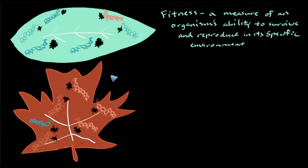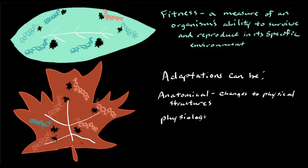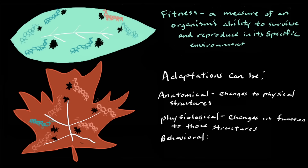As you can see, natural selection is intimately intertwined with the environment in which it takes place, and this is why natural selection can lead to adaptation. Even the concept of adaptation is diverse. Adaptations can be anatomical — changes to physical structures — or physiological — changes in the function of these structures — or adaptations can be changes to behavior.